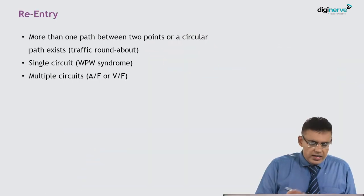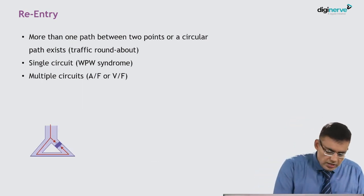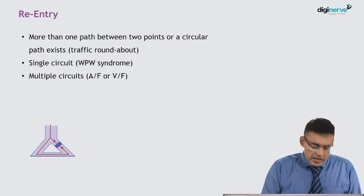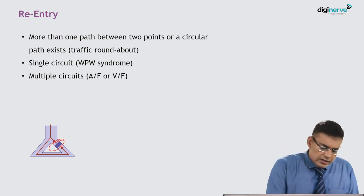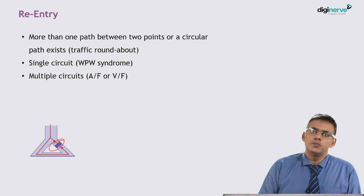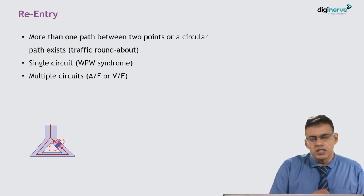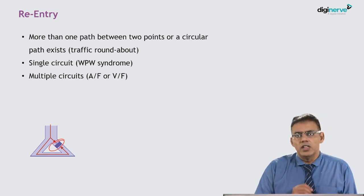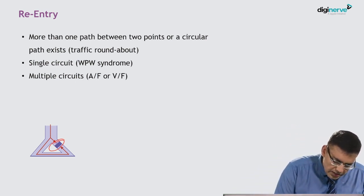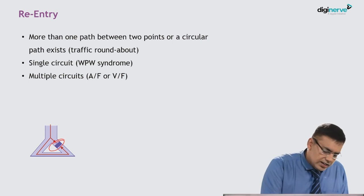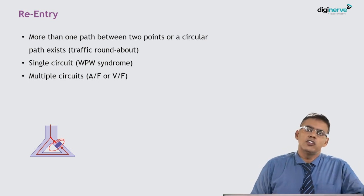Re-entry occurs when more than one path exists between two points. The impulse divides into two paths. If there is a lesion due to ischemia or scar tissue, that area becomes refractory and the impulse cannot pass through it. If the refractory period is over by the time the impulse arrives via the alternate path, the impulse passes through and stimulates the tissue again and again, continuously generating action potentials — this is the re-entry mechanism.